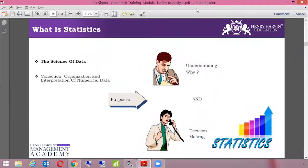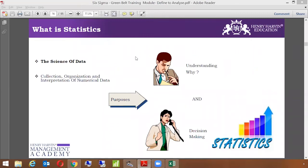Now we're going to learn about statistics. Statistics is a very interesting topic in the overall Six Sigma journey. It is a very essential part of the Six Sigma journey. Statistics is the science of data, which means collecting, organizing, and interpretation of numerical data. The purpose is to understand why a problem has occurred and to help us make certain decisions.